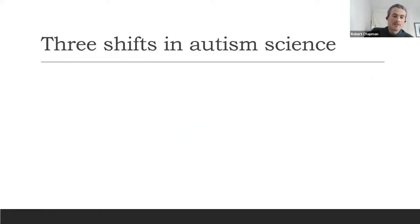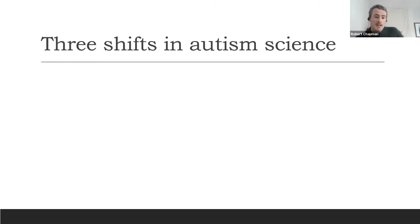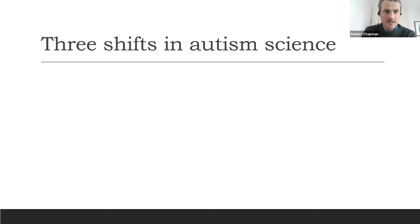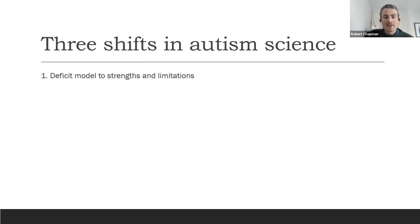I can't give a complete definition of neurodiversity paradigm science yet because the shift hasn't been completed, but there are three more specific shifts in autism science in recent decades which give a fairly good idea. The first is the change from the deficit model to looking at strengths and limitations. People used to try to find a core deficit to explain everything about autism, but now there's a much more balanced view.